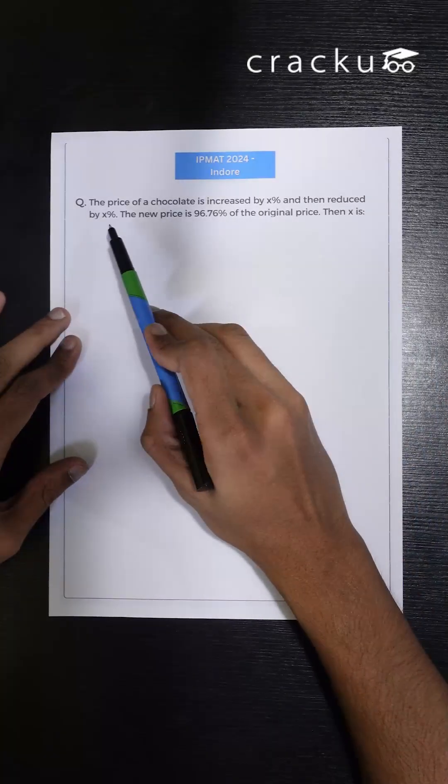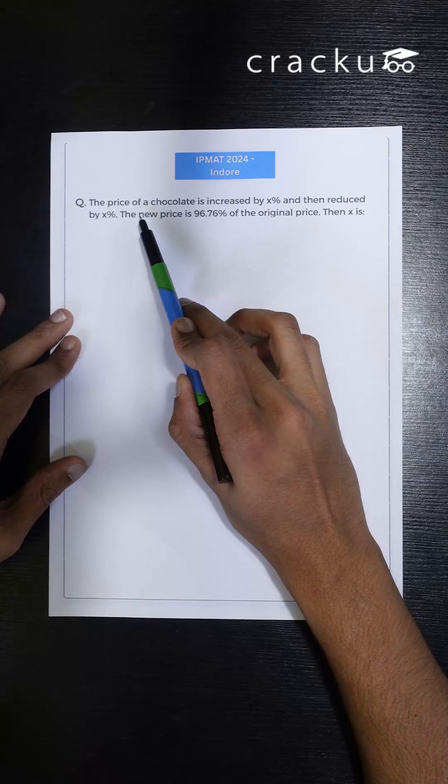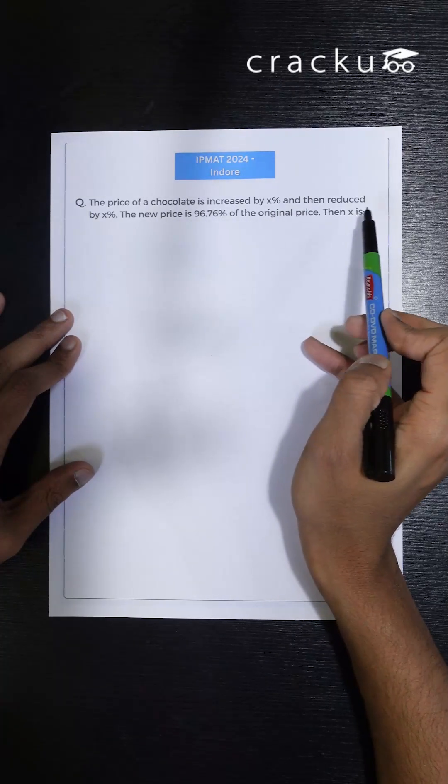This is a previous year IPMAT question. We have been told that the price of a chocolate is increased by x percent and then reduced by x percent. The new price is 96.76 percent of the original price. Then what is x?